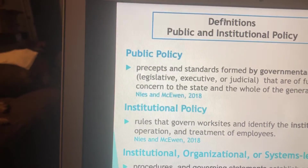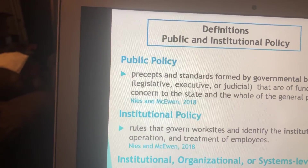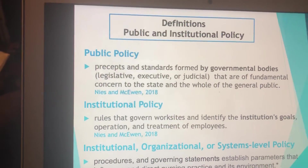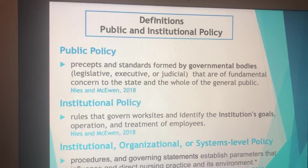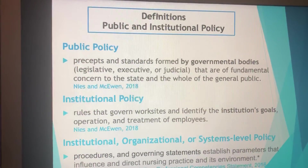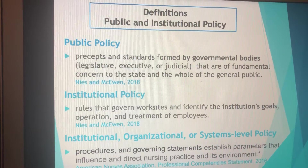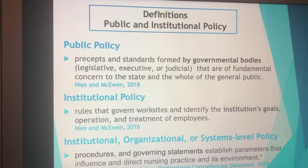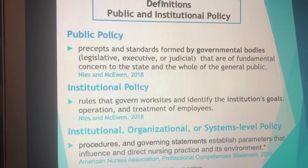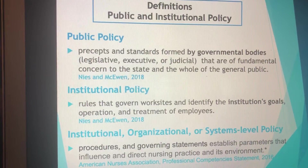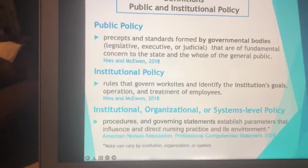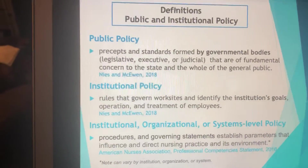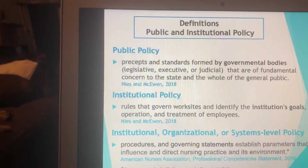Public policy consists of standards — precepts is another word — formed by governmental bodies. Legislative is the legislature, whether at the federal or state level, usually the House of Representatives and the Senate. Executive means the president, or at the state level, the governor. Judicial would be the Supreme Court, or your state Supreme Court. These are issues of fundamental concern to the state and the general public or the nation, whether at the state, national, or territorial level.